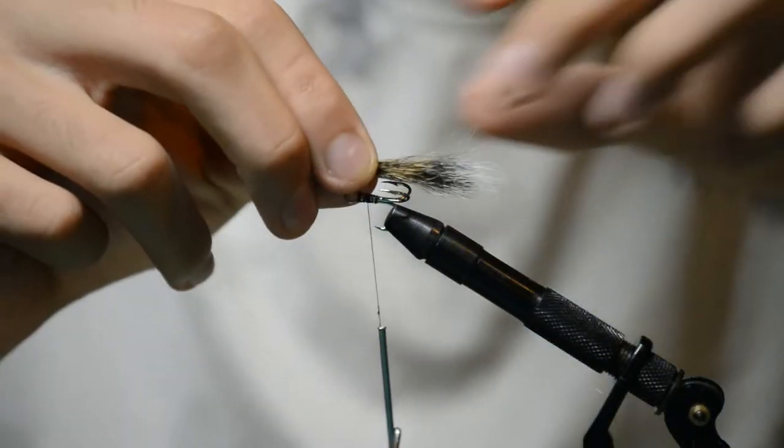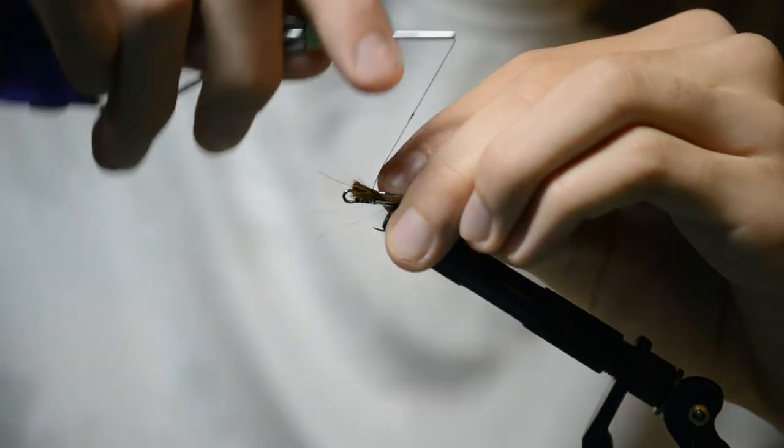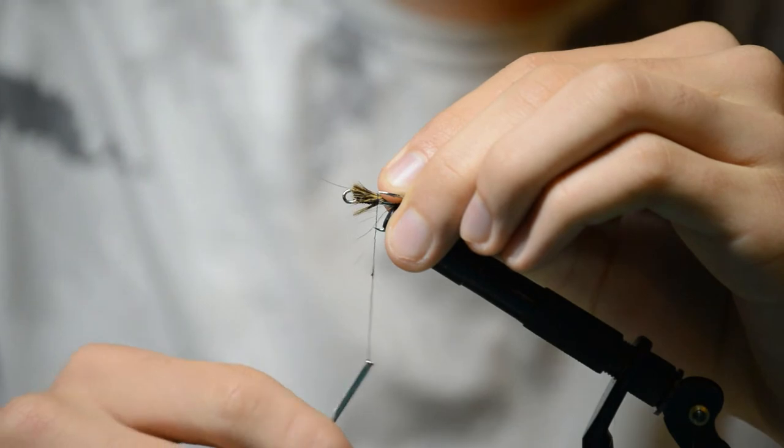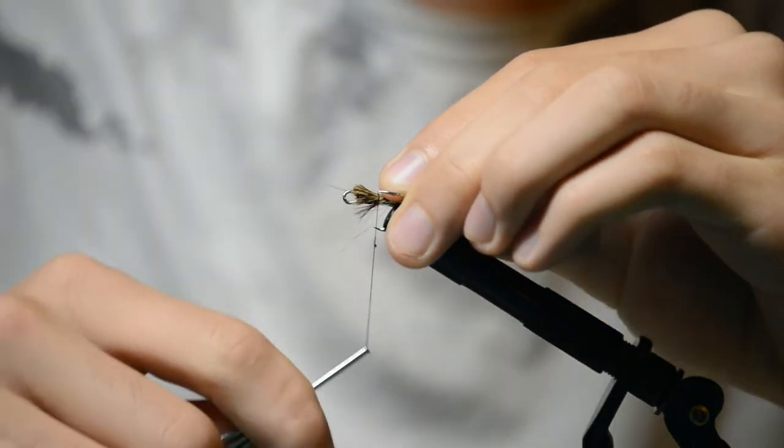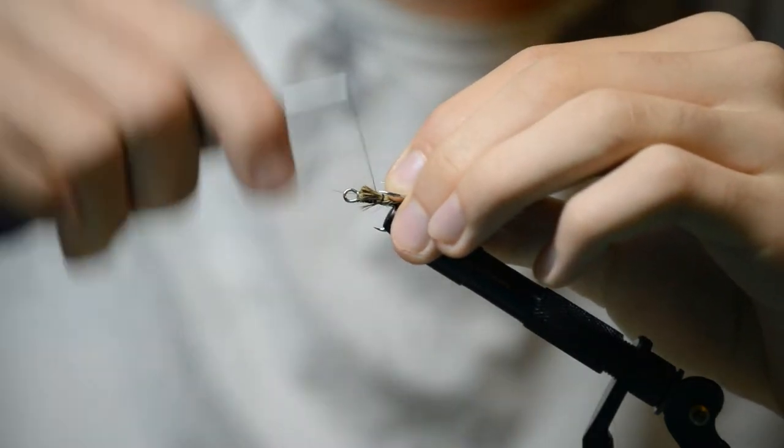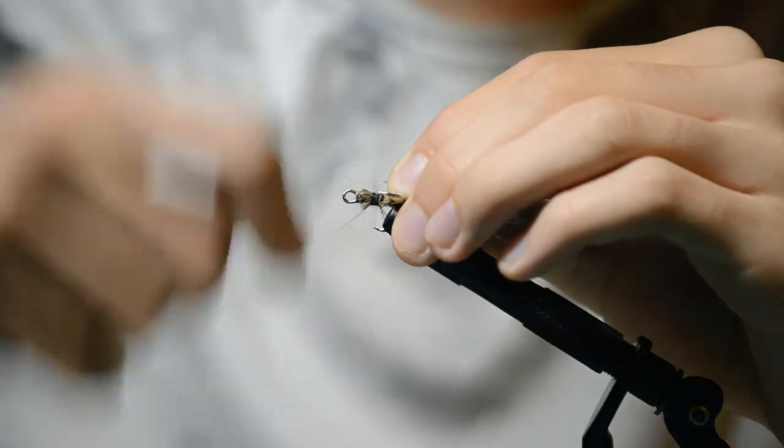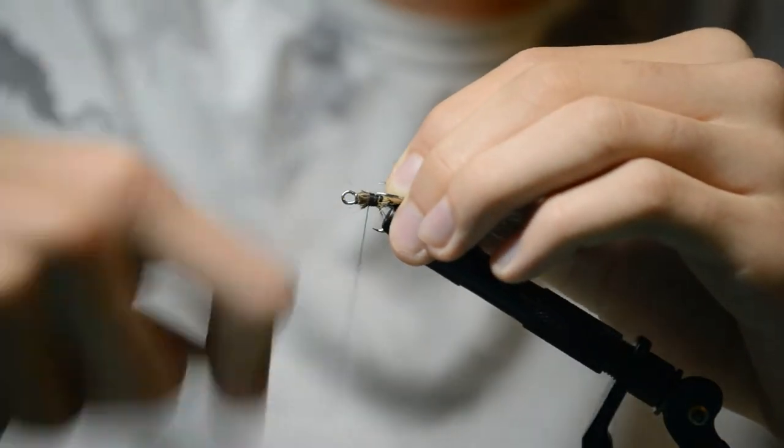Now we're gonna put it right on here. Take our thread, pinch that hair down, and we're gonna pull it back some so it's out away from that thread eye. Now we're just gonna wrap it up.